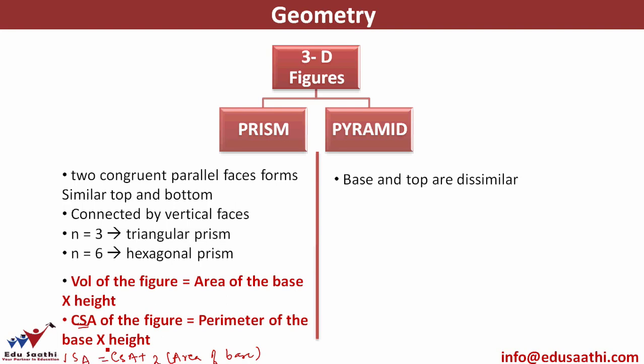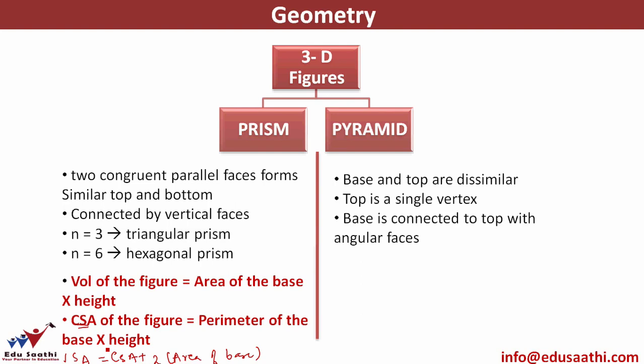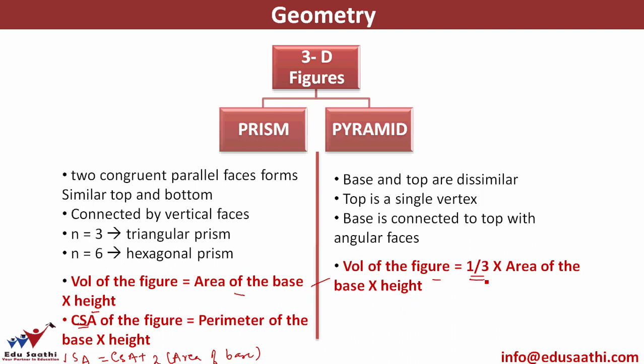In a pyramid, the base and top are dissimilar — there is actually no top. The top is in the form of a single vertex, and all edges of the base are connected to that top vertex by angular faces. The volume of any pyramid is one-third the area of the base into height. So the volume of a pyramid is one-third of the volume of a prism for the same base and same height.